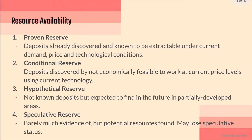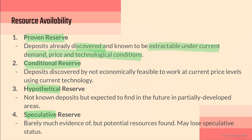For resource availability, we have four different categories: proven reserve, conditional, hypothetical, and speculative. Proven reserve basically means it is already proven — these are deposits that have already been discovered and are known to be extractable under current demand, price, and technological conditions.